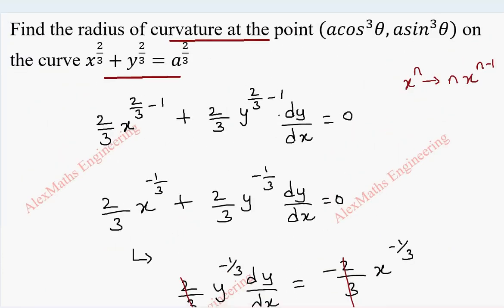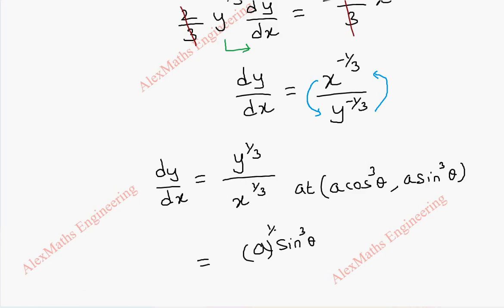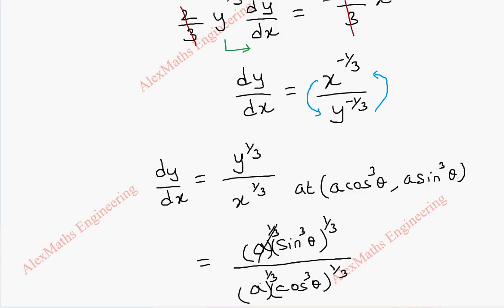They have given the point (a cos³θ, a sin³θ). Substituting for y: (a sin³θ)^(1/3) = a^(1/3)·sin θ, and for x: (a cos³θ)^(1/3) = a^(1/3)·cos θ. The a^(1/3) terms cancel, so dy/dx = sin θ / cos θ = tan θ.